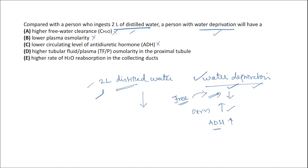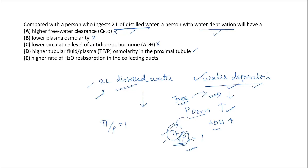The fourth choice is higher tubular fluid to plasma osmolality ratio (TF/P) in the proximal tubule. Although plasma osmolality is raised in the water-deprived state, the same fluid reaches the glomerular filtrate, so the TF/P osmolality ratio remains one in both states. There is no change in the ratio — the tubular fluid reaching the early proximal tubule will have a similar osmolarity, keeping TF/P equal to one.